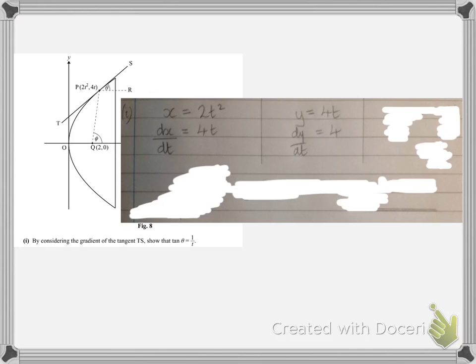Differentiating x with respect to t, we multiply by the power, subtract 1 from the power, we get dx/dt is 4t. Similarly for y, if we differentiate with respect to t, we get 4. Then we want dy/dx which is dy/dt over dx/dt, so we get 4 over 4t, the 4s cancel, giving us 1 over t. So the gradient of TS is 1 over t.